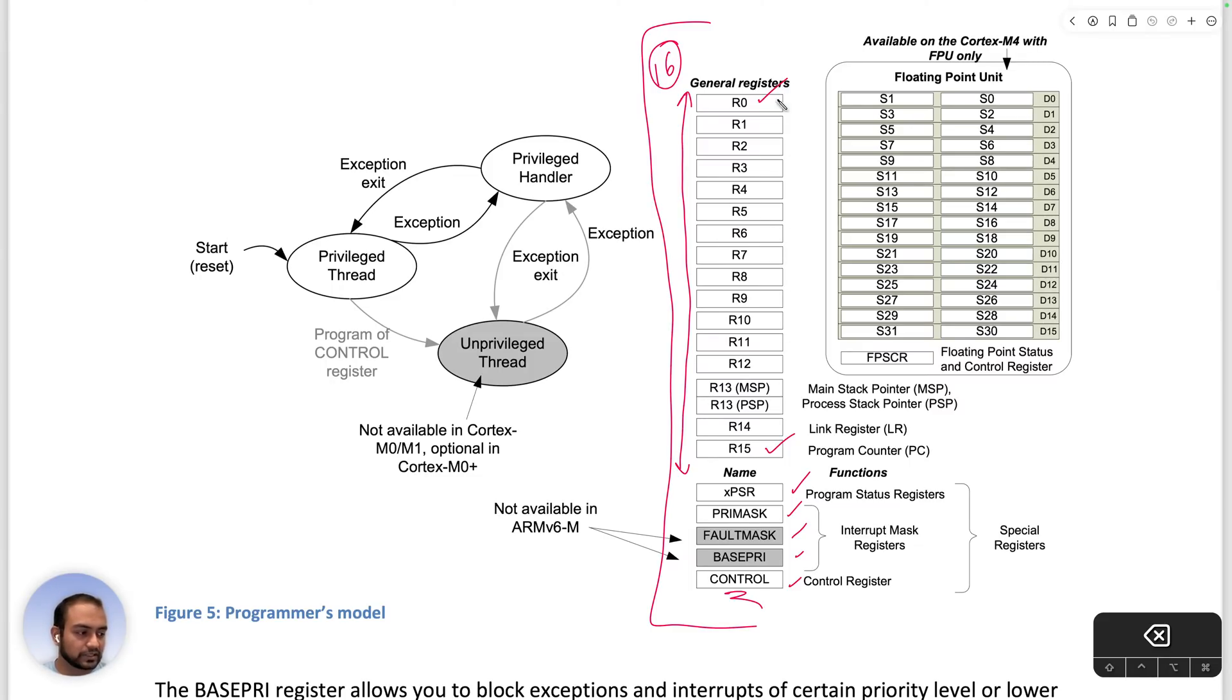Looking at R0 to R15, I want you to remember something, which is R13 here can exist in two or can have two potential values. One is called the MSP, the other one is called the PSP. So on this CPU, the stack that we create for the code to execute, the function calls to work, there are two kinds of stack we can have. One is called the MSP and one is called the PSP, the process stack pointer and the main stack pointer. What these are, we'll cover when we're talking about modes and privileges as part of the next video. But just remember that R13 is used as a stack pointer, and a stack pointer is required for C function calls to work.